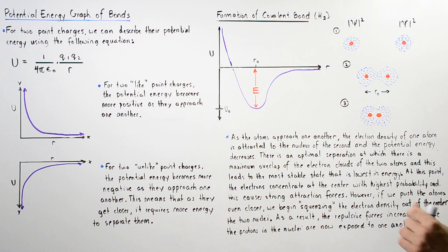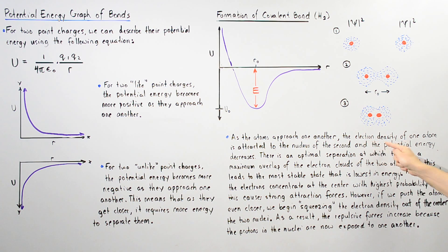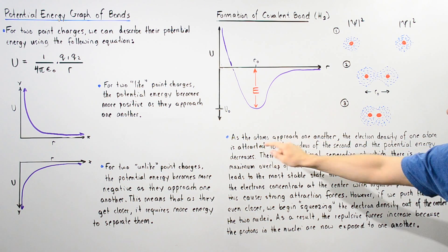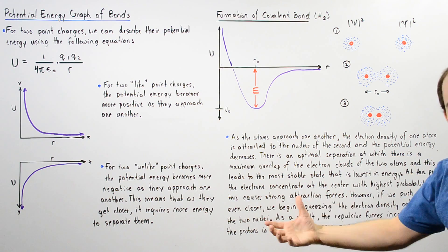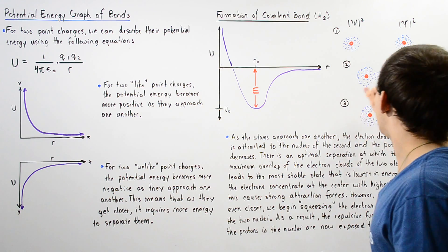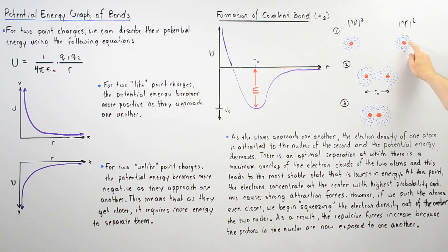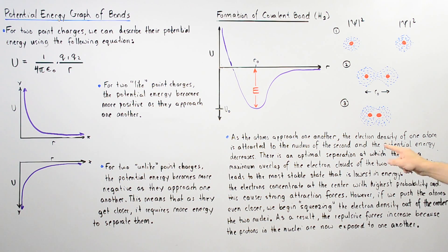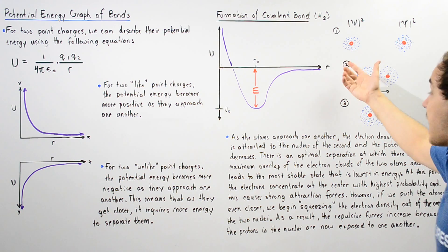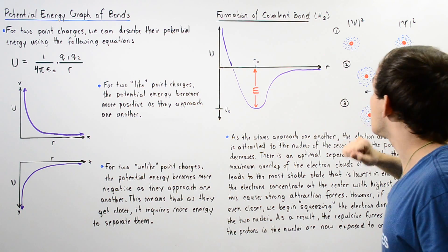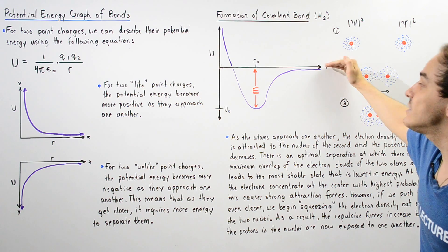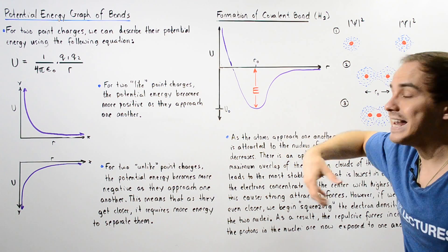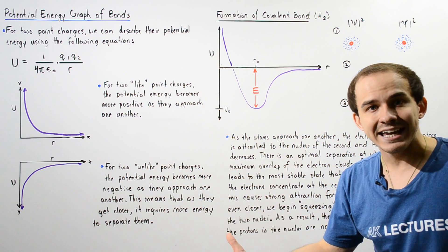As the atoms begin to approach one another, the electron density of one atom is attracted to the nucleus — to the proton found in the nucleus of the second atom — and vice versa. And that means as they approach, our energy decreases and becomes more negative.